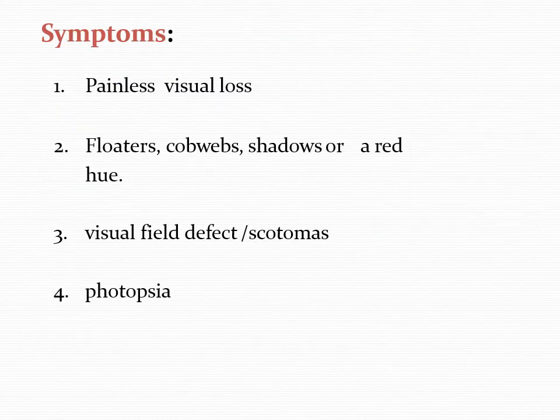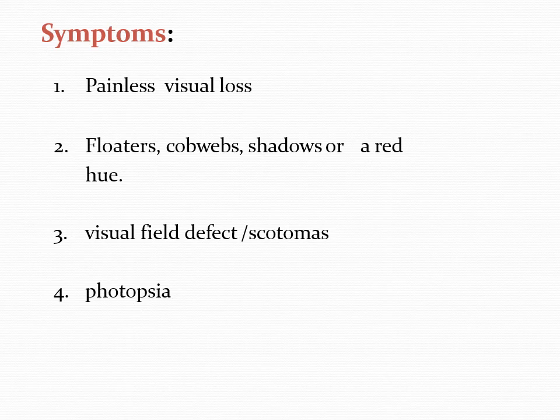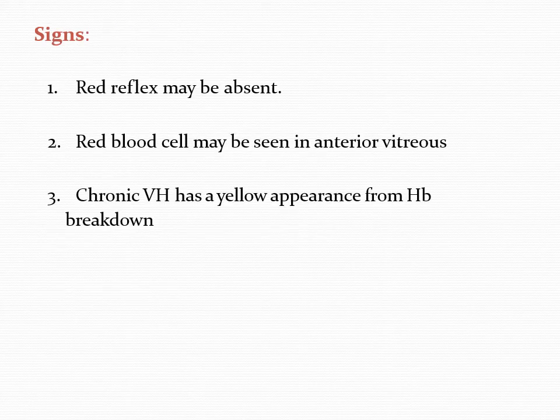The symptoms of vitreous hemorrhage include painless gradual diminution of vision, and the appearance of floaters in front of the eyes. These floaters can appear as cobwebs, shadows, or a red hue. Floaters occur because the vitreous hemorrhage obstructs light rays falling on the retina. There are also visual field defects or scotomas, and photopsia — which is seeing flashes of light. Photopsia occurs when the vitreous hemorrhage rubs against the retina and irregularly excites it.